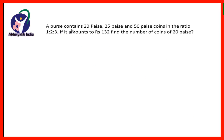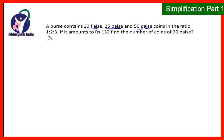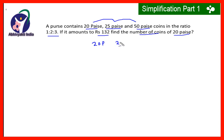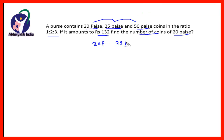Now the next question: a purse contains 20 paise, 25 paise and 50 paise coins in the ratio 1:2:3. If it amounts to rupees 132, find the number of coins of 20 paise. Friends, here the denominations are in paise — in the previous case it was in rupees. So it is 20 paise, 25 paise and 50 paise.